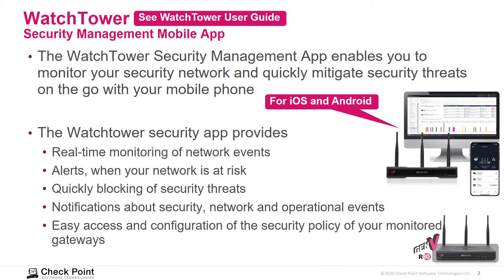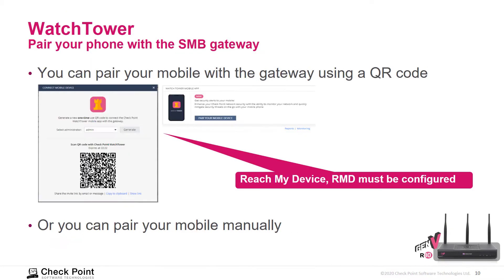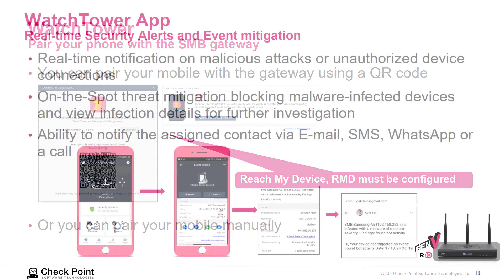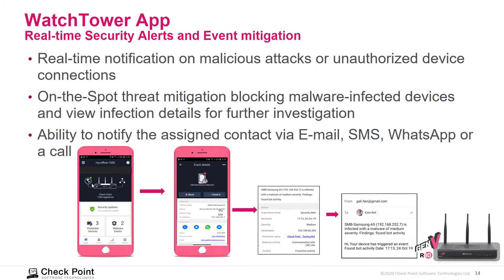It also provides easy access and configuration of the security policy of your monitored gateways. There is a Watchtower user guide reference for additional information. The Watchtower mobile app can be easily paired with the SMB gateway using a QR code — however, the RMD feature needs to be enabled for that — or you can simply pair it manually.